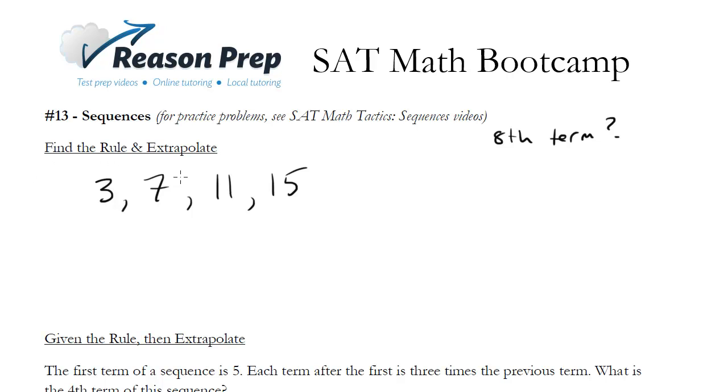Well it looks like the rule is you add 4 to each term as you go. So notice I've got plus 4, plus 4, plus 4. So let me continue the sequence based off of this. The next one will be 19, and then we'll see 23, 27, and finally 31. And that's my 8th term.